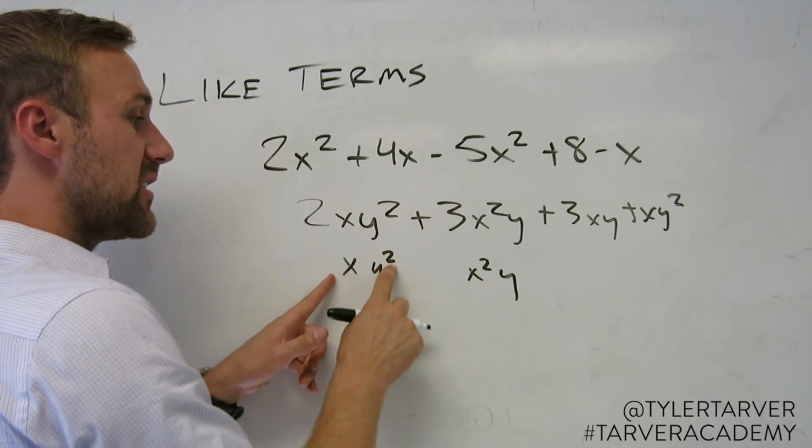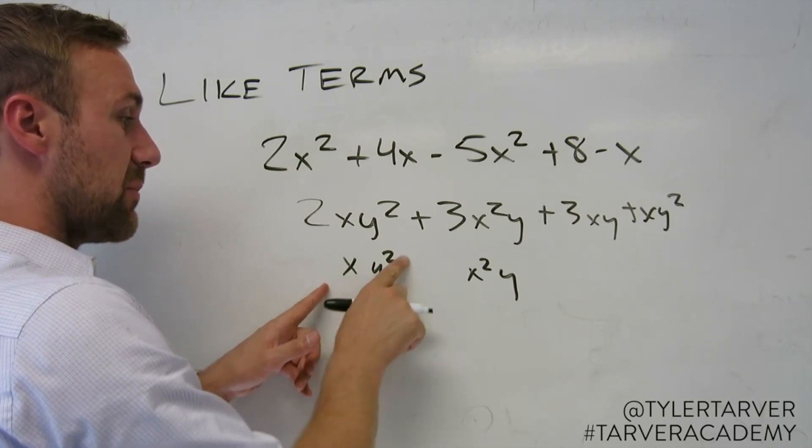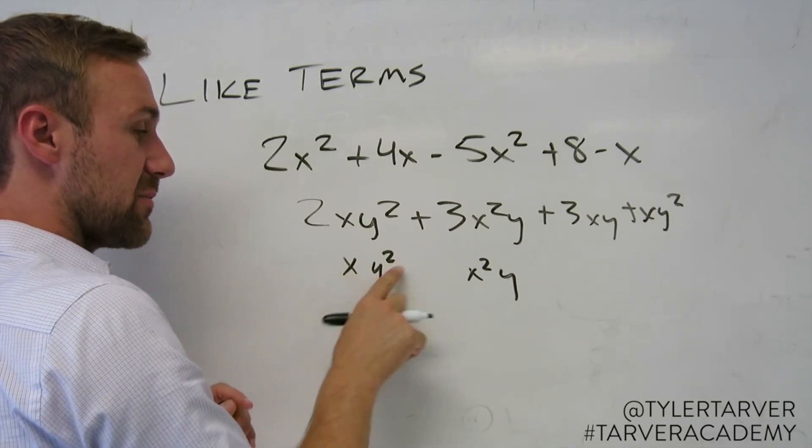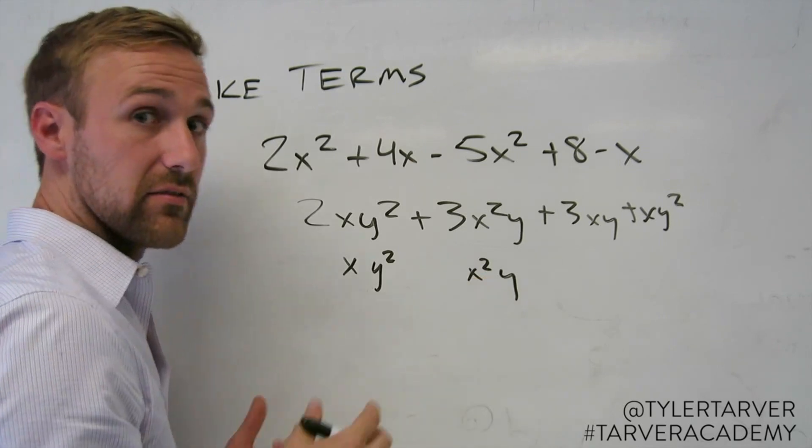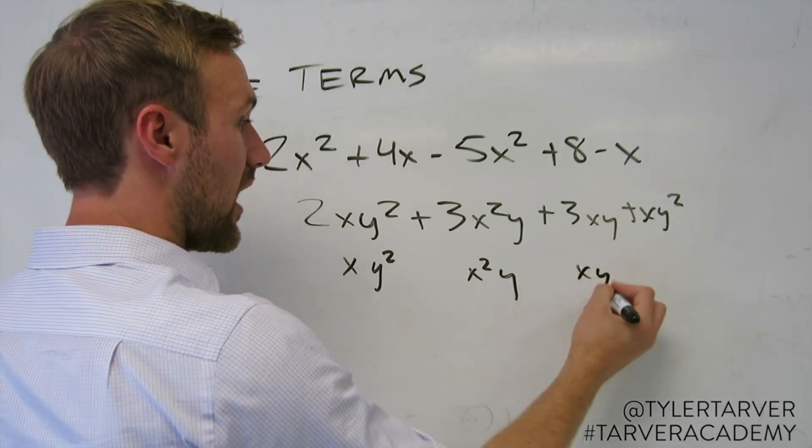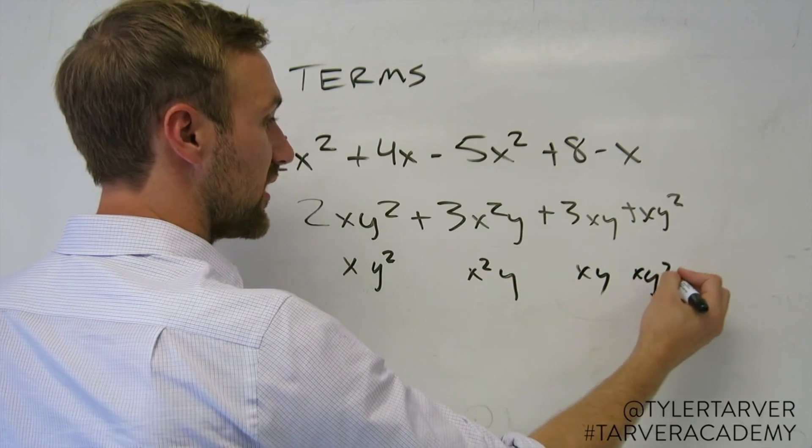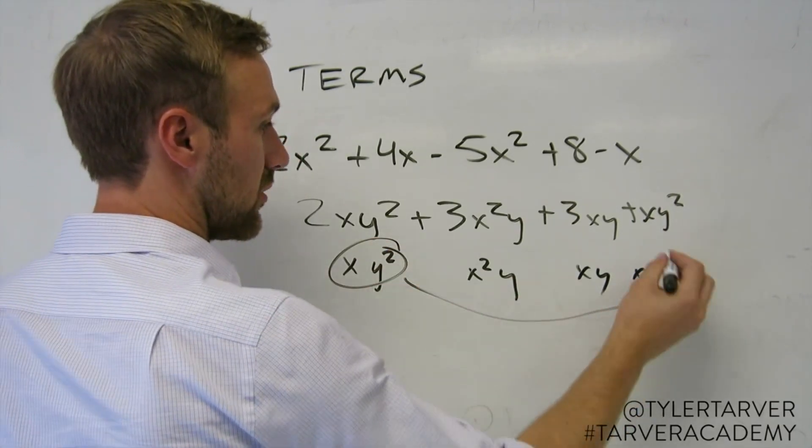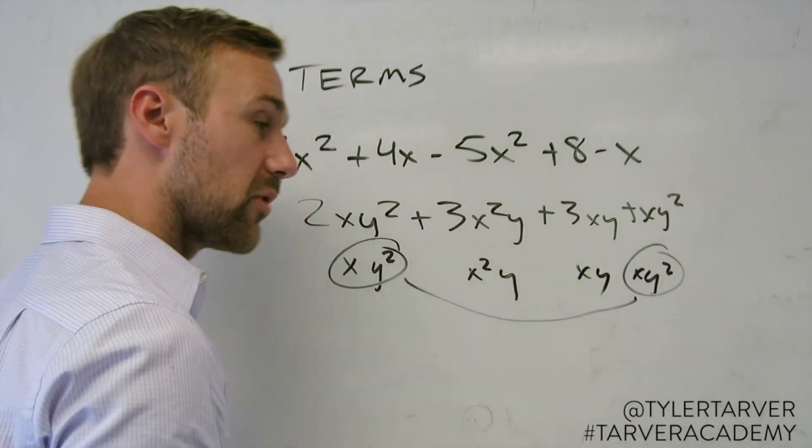These are not like terms. Because the variable has to be attached to the exact same exponents. The y has the exponent here. This one, the x has it. Not going to work. xy, still nothing. xy squared matches up with this one. Those are like terms.